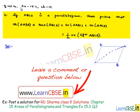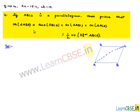Let us discuss question number 4, exercise 15.2, chapter 15. If ABCD is a parallelogram, then prove that the area of triangle ABD is equal to area of triangle BCD, equal to area of triangle ABC, equal to area of triangle ACD, equal to half times the area of the whole parallelogram ABCD.